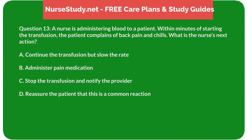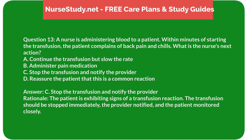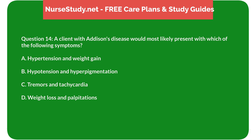Question 13: A nurse is administering blood to a patient. Within minutes of starting the transfusion, the patient complains of back pain and chills. What is the nurse's next action? A) Continue the transfusion but slow the rate, B) Administer pain medication, C) Stop the transfusion and notify the provider, D) Reassure the patient that this is a common reaction. Answer: C, Stop the transfusion and notify the provider. Rationale: The patient is exhibiting signs of a transfusion reaction. The transfusion should be stopped immediately, the provider notified, and the patient monitored closely.